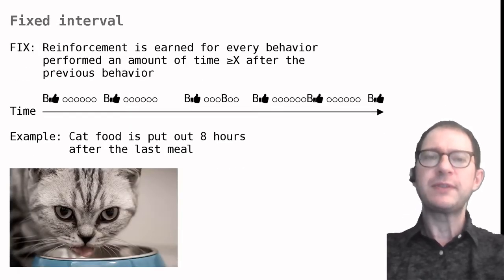Let's now move to fixed interval schedules. This is the kind of schedule where rewards become available at fixed intervals after the last behavior. For example, if we put out food for our cat after eight hours since the last meal, we reward the cat's checking for food on an FI eight-hour schedule.